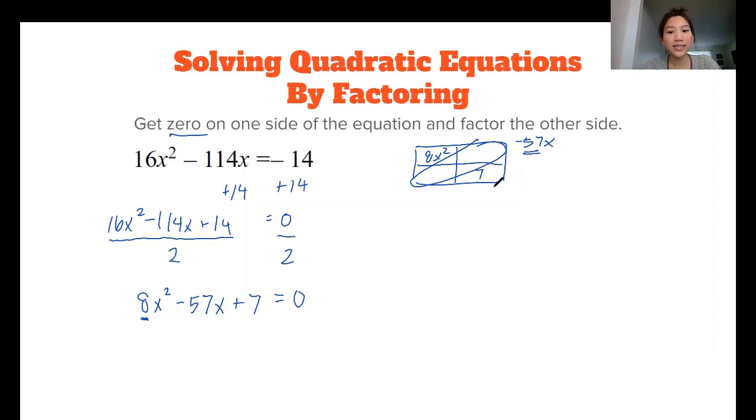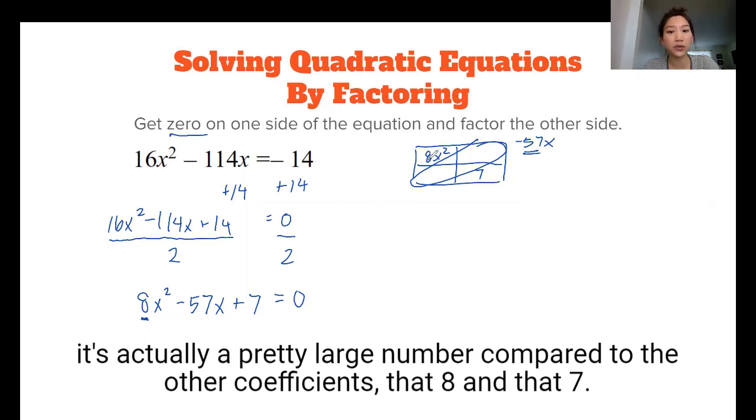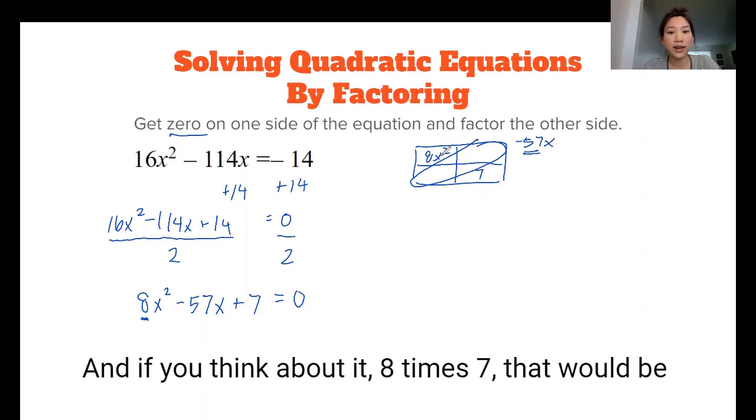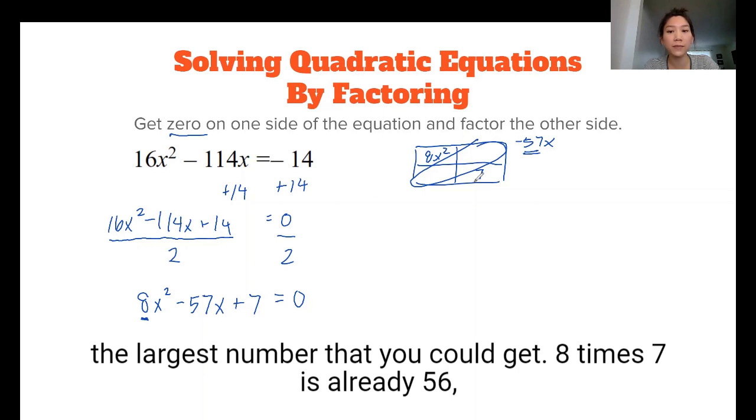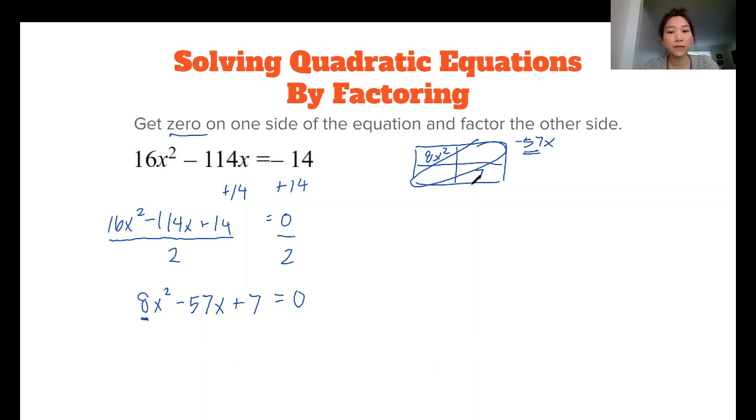And if you think about it, 8 times 7, like that would be the largest number that you could get. 8 times 7 is already 56. So in order to get 57, that means that the 8x needs to be factored out into 8 and x.